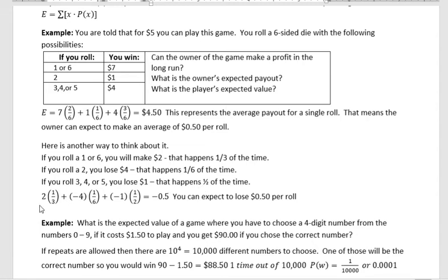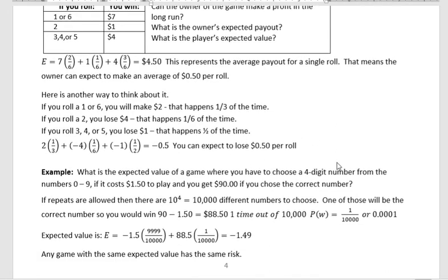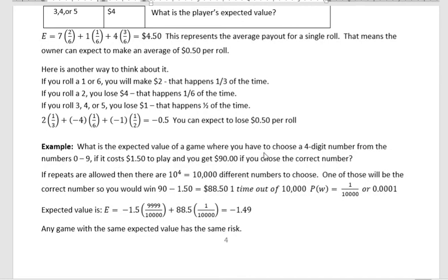So your expected value is: (2 × 1/3) + (−4 × 1/6) + (−1 × 1/2). You're winning $2 one-third of the time, losing $4 one-sixth of the time, and losing $1 half the time. Adding those together, your expected value is negative $0.50. You can expect to lose $0.50 per roll on average — of course you never lose exactly $0.50, but this is the average.